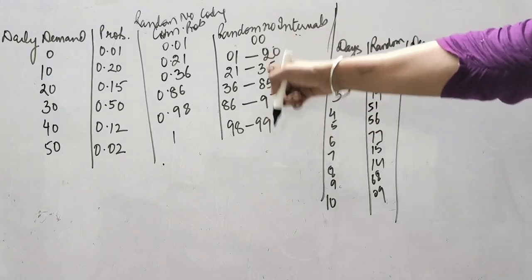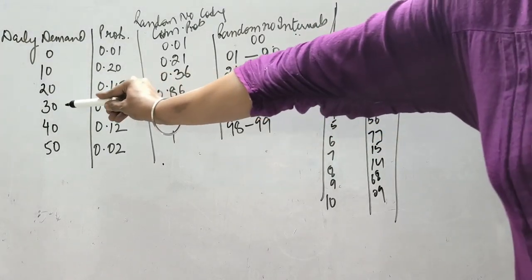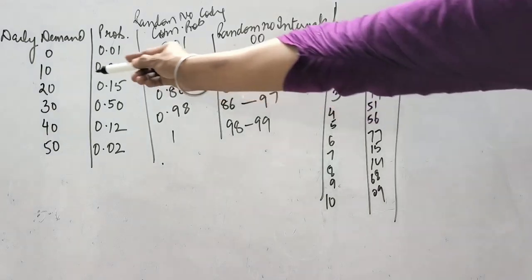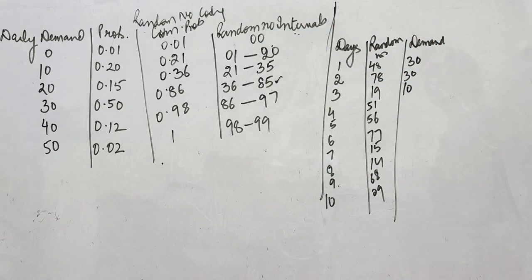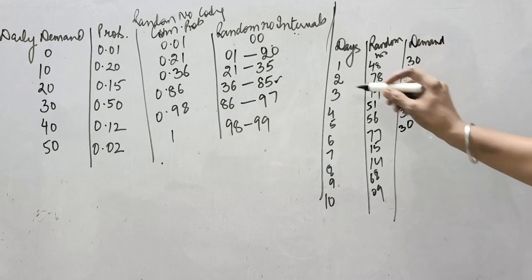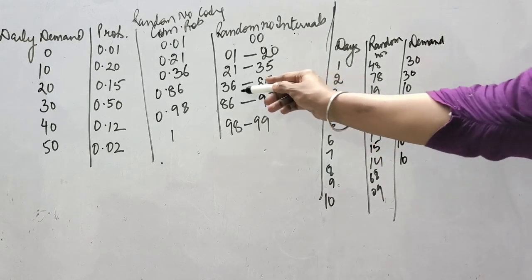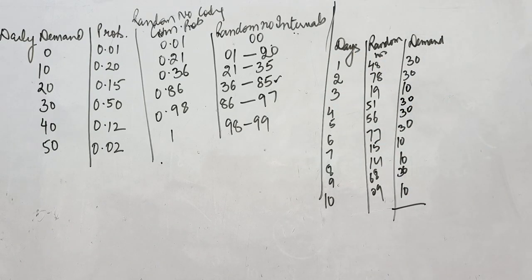Now on the basis of these random numbers, we generate the demand. For 48 — look at the range we created; 48 lies in that range, so demand is 30. For 78, it lies in the same range, so demand is again 30. For 19, it lies in the range corresponding to demand 10. For 51, demand is 30. For 56, demand is 30. For 77, demand is 30. For 15, demand is 10. For 14, demand is also 10. For 68, demand is 30. And 09 lies in its corresponding range.